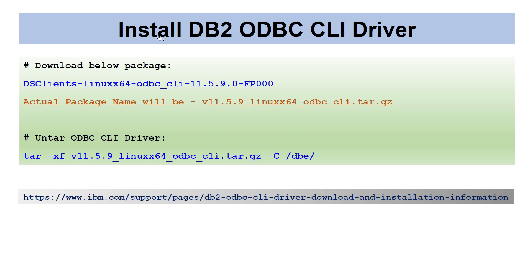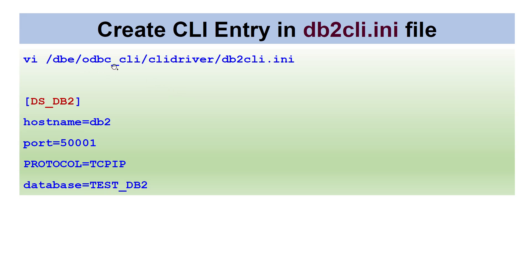Although I mentioned 'install,' there is nothing to actually install — you just have to untar that file to a particular location. Remember that location because it plays a significant role: we are going to use it when we create entries in the init parameter file. Under the extraction location you will create a file called db2cli.ini.